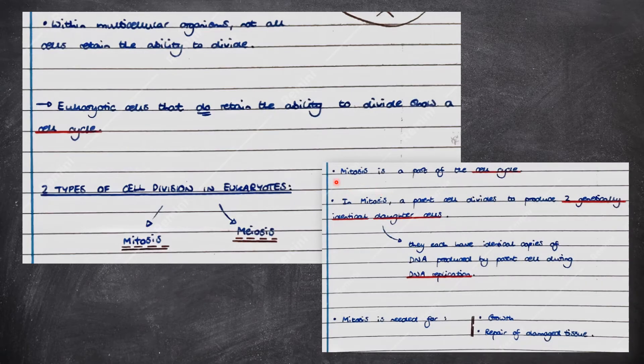So today we'll be talking about mitosis. Mitosis is a part of the cell cycle. In mitosis, a parent cell divides to produce two genetically identical daughter cells. They each have identical copies of DNA produced by the parent cell during DNA replication. Mitosis is needed for, firstly, growth and also repair of damaged tissue.